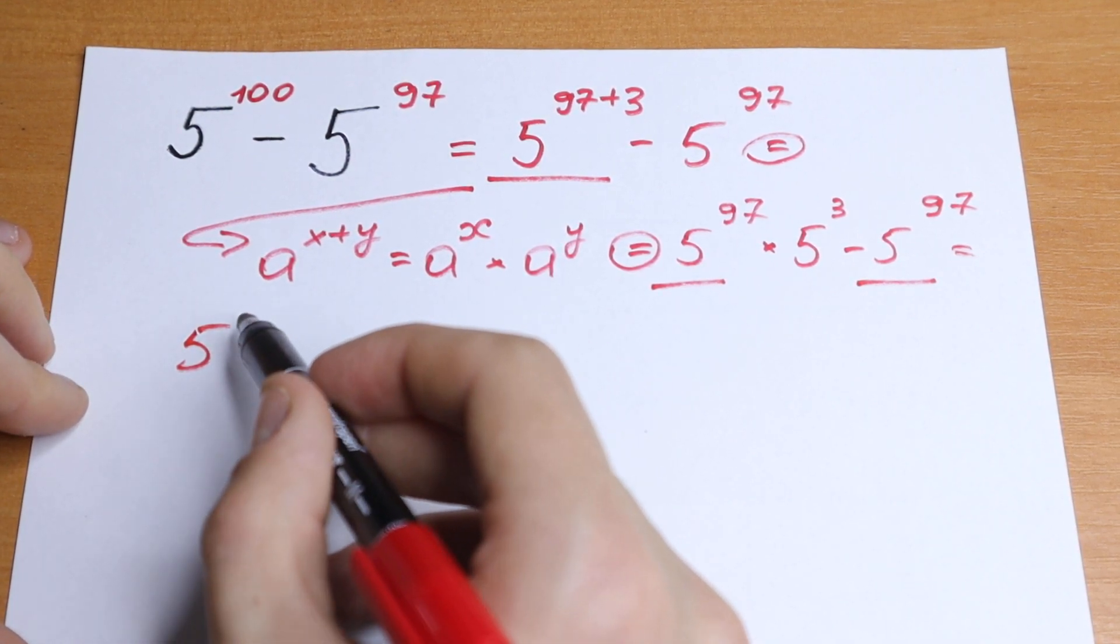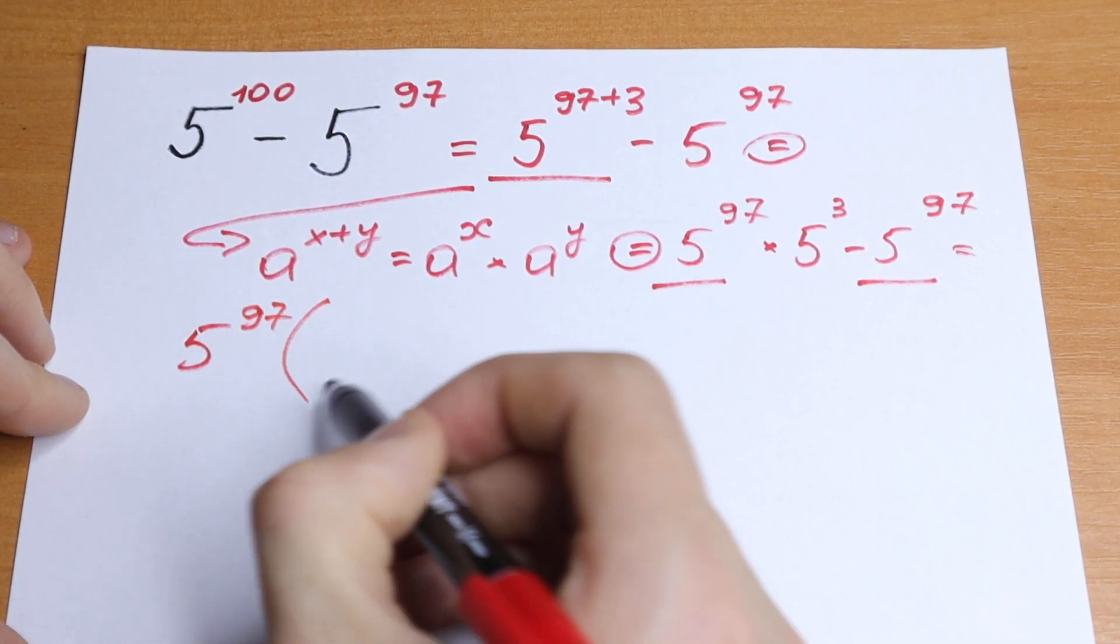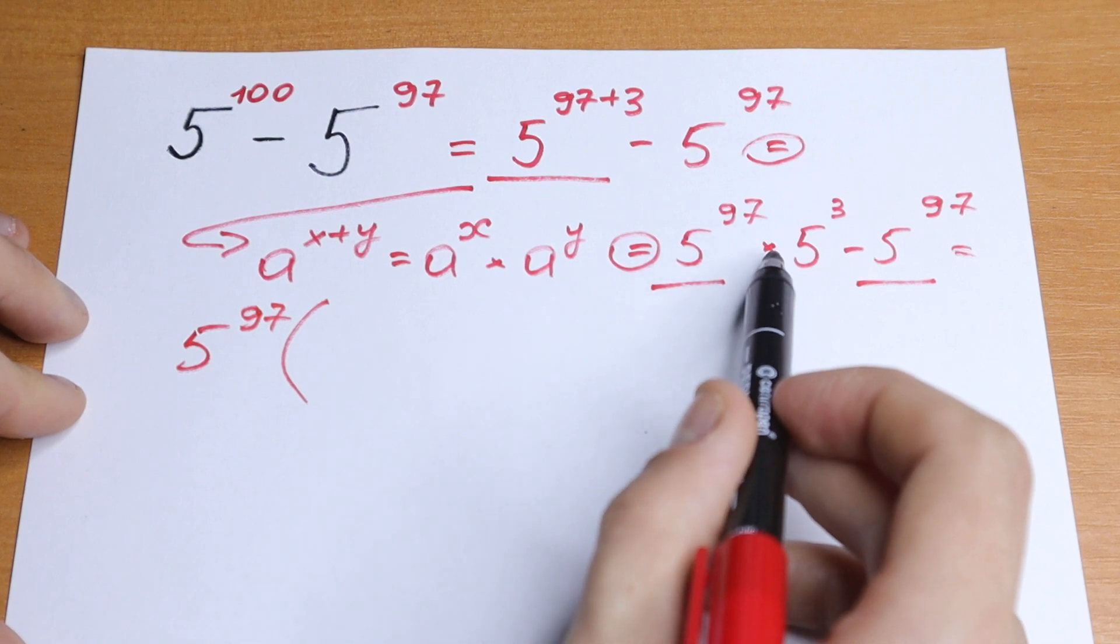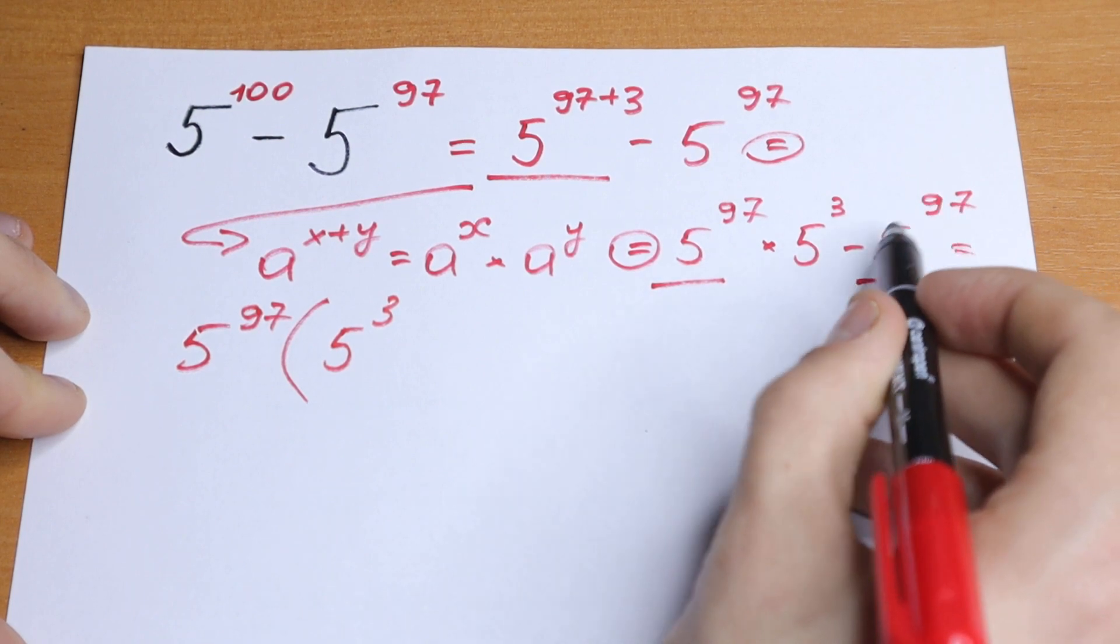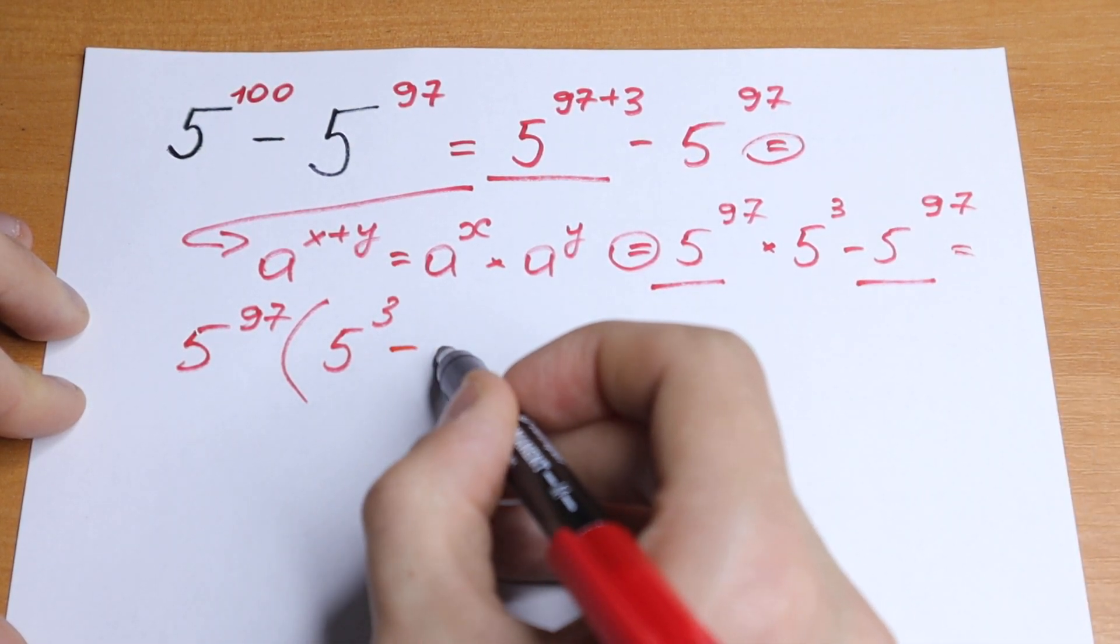So we will have 5 to the power 97. And in parentheses, what we will have? We will have this 5 cube from here, and minus—right here we will have only 1, because we don't have anything—minus 1.